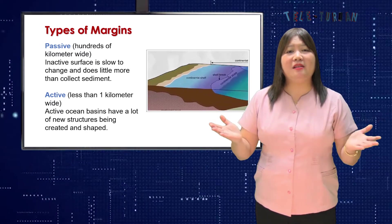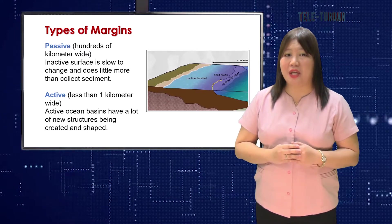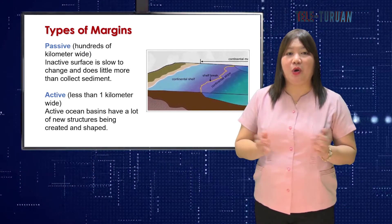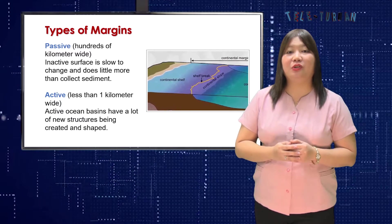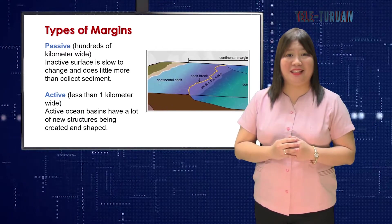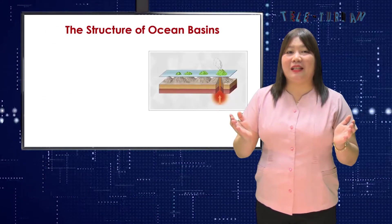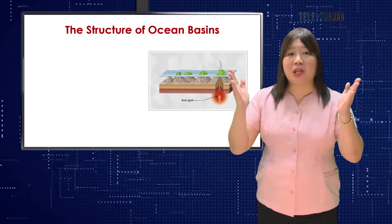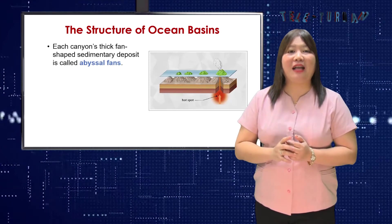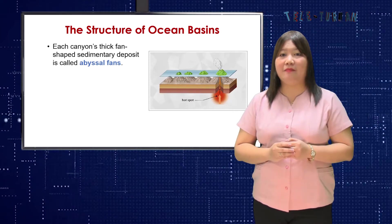Ocean basins can be either active, with a lot of new structures being created and shaped, or they can be inactive, where their surface is slow to change and does little more than collect sediment. All of those slopes are capped by submarine V-shaped canyons. Each canyon's fan-shaped sedimentary deposit is called an abyssal fan.